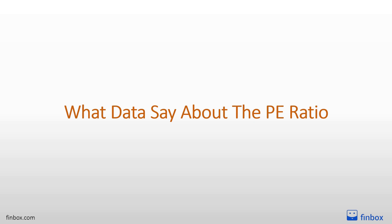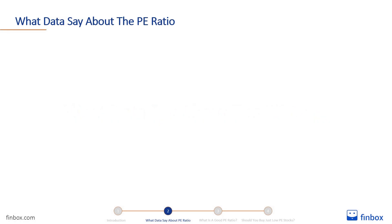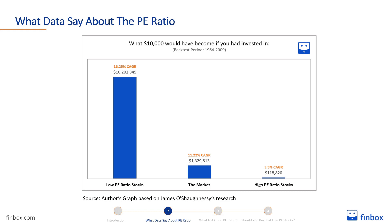In his book 'What Works on Wall Street,' James O'Shaughnessy divides the US stock market into 10 deciles according to the P/E ratio of stocks, and finds that stocks in the lowest decile — those with the lowest P/E ratio — outperformed the market to a large extent, while those in the highest decile — those with a high P/E ratio — drastically underperformed it.